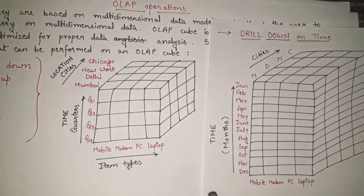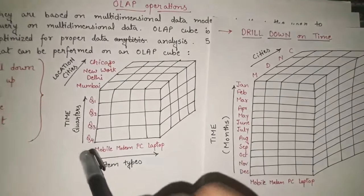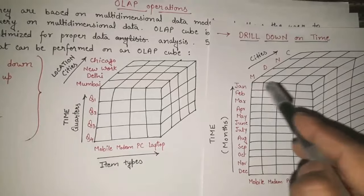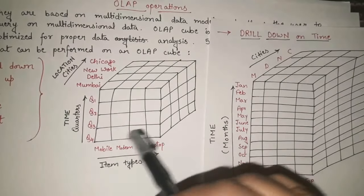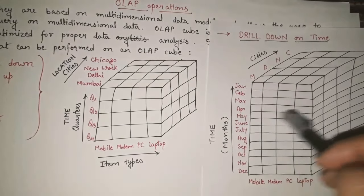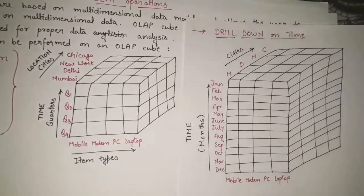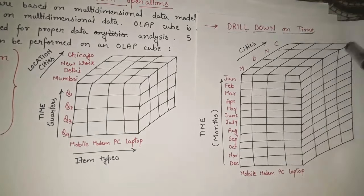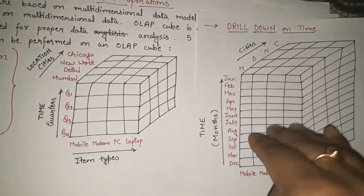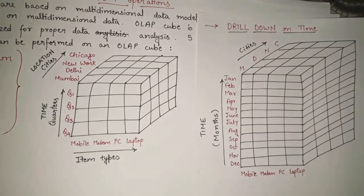Since each quarter contains three months, instead of four rows for Q1, Q2, Q3, Q4 we now make twelve rows with all the months, getting specific information for each month individually. So we have drilled down on time — these two dimensions remain as they are and we have gone into more detail on the time dimension.